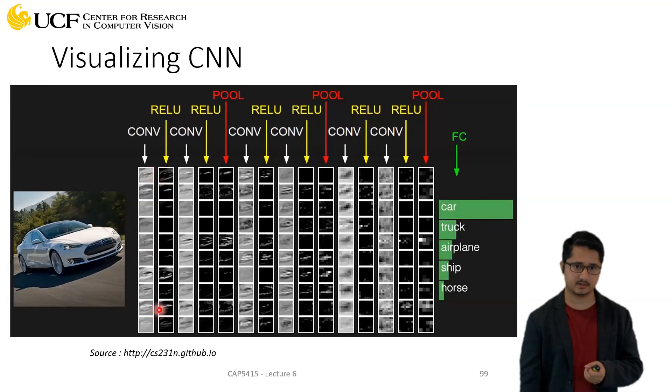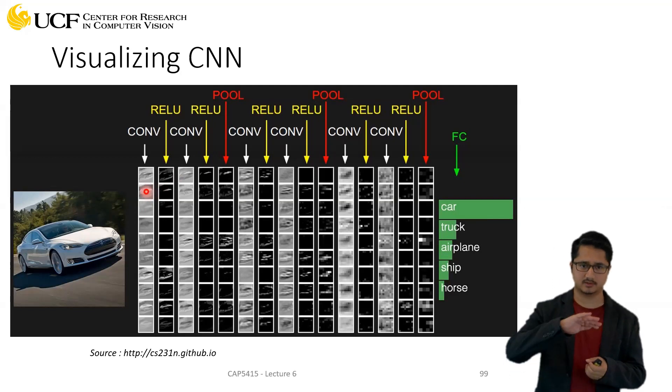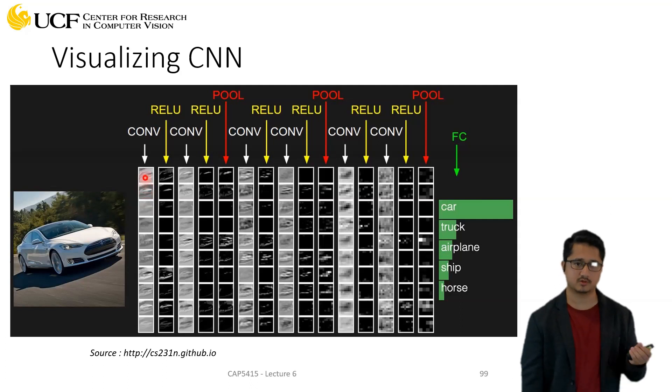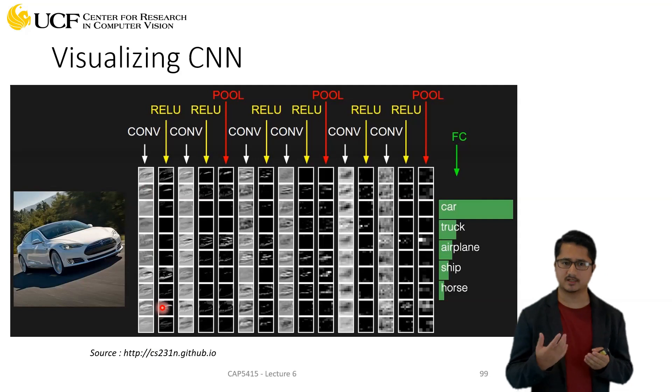By the way, the second column over here is after ReLU activation, which means that all the negative values are clipped and you only keep the positive values. Here you can see that it's getting highly active when you have the hood of the car which might be very shiny. So it could be the first filter responds to shadows, the second filter responds to shiny surfaces, and so on.